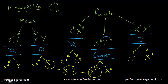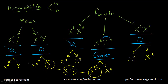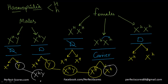Let's suppose fertilization happens between this Y and this particular X carrying the recessive allele — what is their offspring going to be? A diseased male. So I hope you are able to understand this.